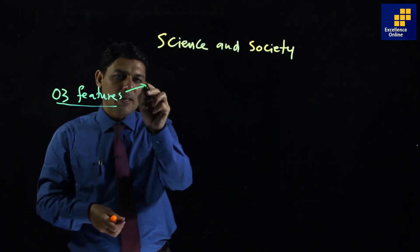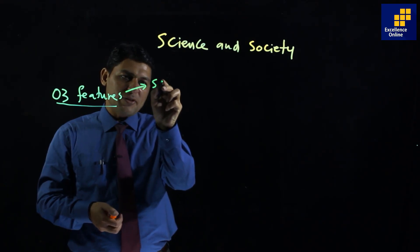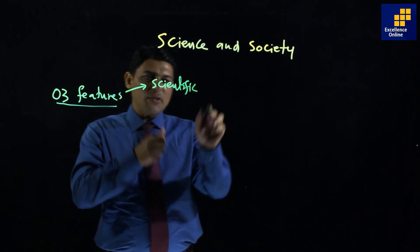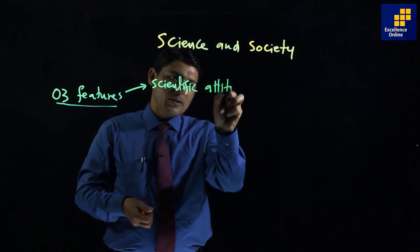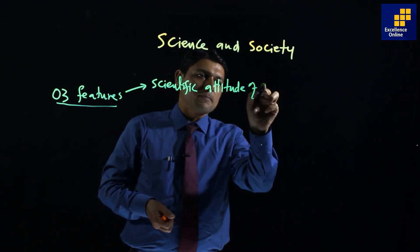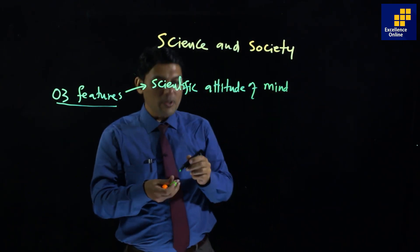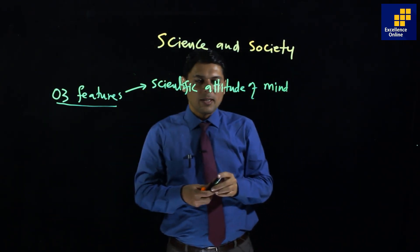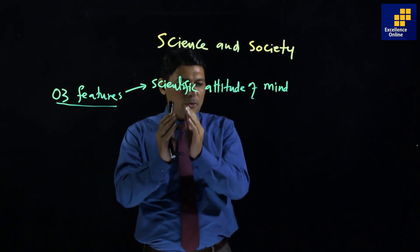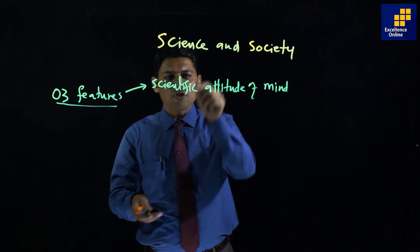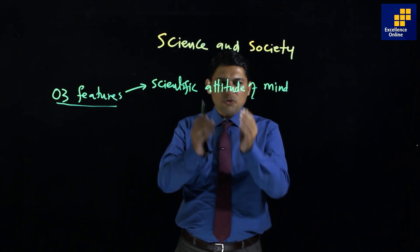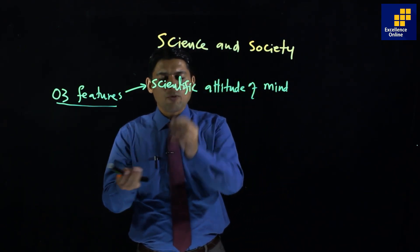Reason number one: Scientific attitude of mind. The most excellent example is Newton. The scientific attitude of mind means that when you think about things, you have questions and you approach them with reason, logic, and observation. They don't act on emotion or dislike.